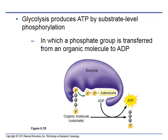Glycolysis is going to produce ATP by substrate-level phosphorylation. That means it's going to take off a phosphate from a substrate — what our enzymes are working on — and add it to ADP, adenosine diphosphate, making it adenosine triphosphate. That extra phosphate is pulled off an organic compound split from glucose, which is 6 carbons, into a 3-carbon substance, and then added to ADP.